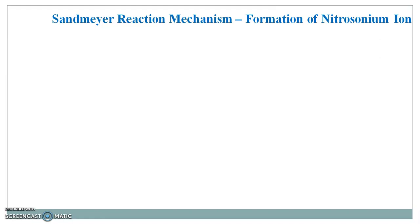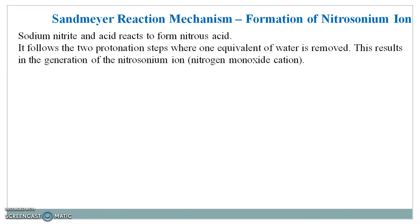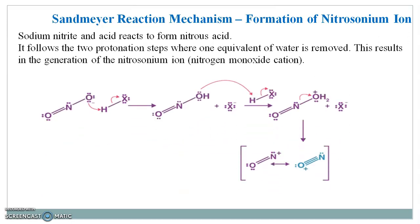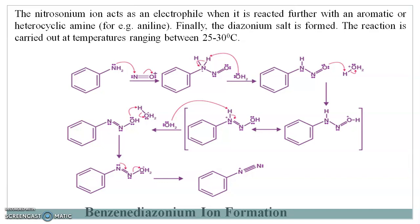For the first step, there is a formation of a diazonium compound, but before that there is a formation of a nitrosonium ion. Sodium nitrite and acid react to form nitrous acid. It follows two protonation steps where one equivalent of water is removed. This results in the generation of a nitrosonium ion, that is the nitrogen monoxide cation. The reaction is carried out at temperatures ranging between 25 to 30 degrees centigrade.